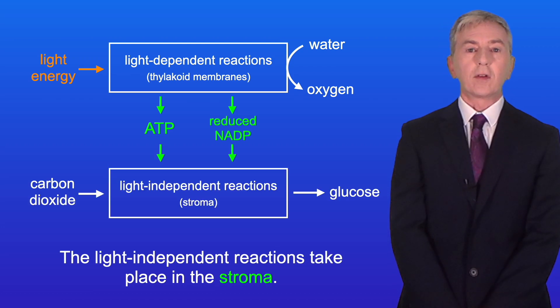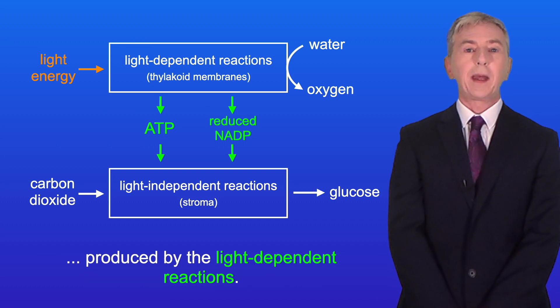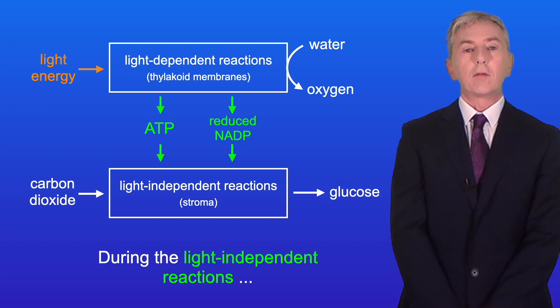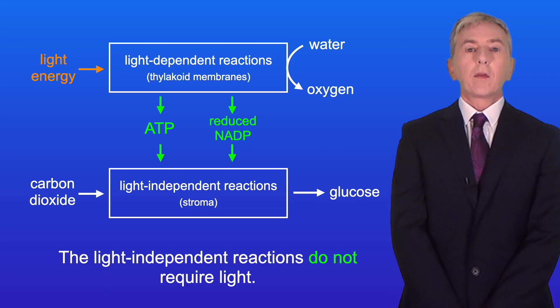Now, the light-independent reactions take place in the stroma and use the ATP and reduced NADP produced by the light-dependent reactions. During the light-independent reactions, carbon dioxide is used to make glucose. The light-independent reactions do not require light.